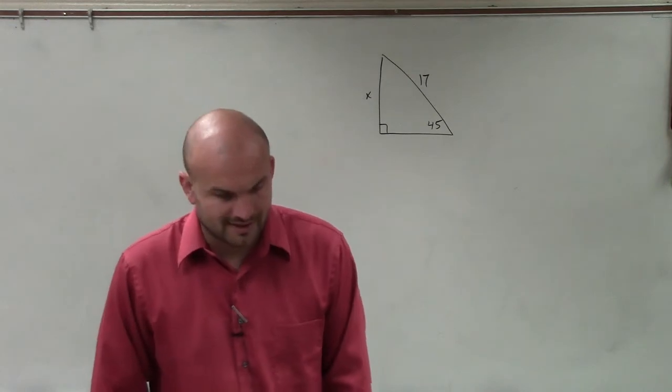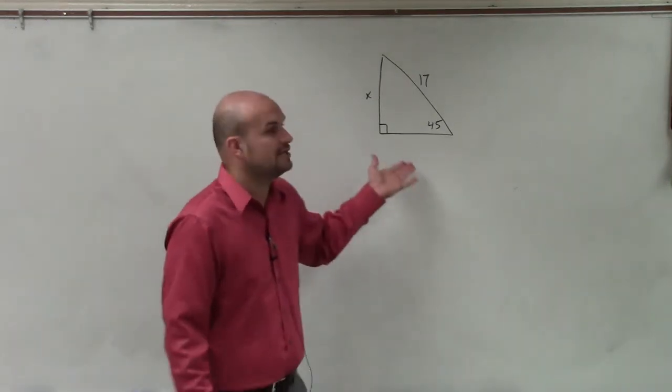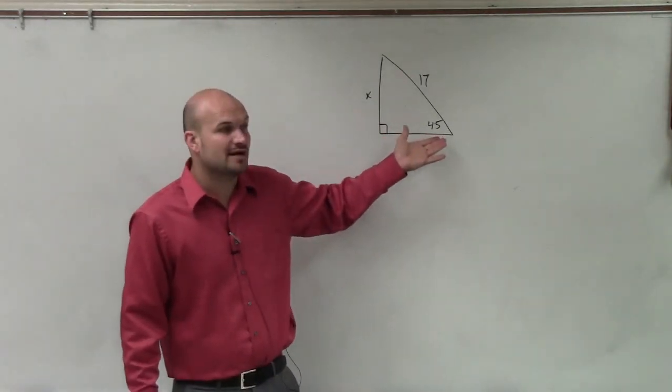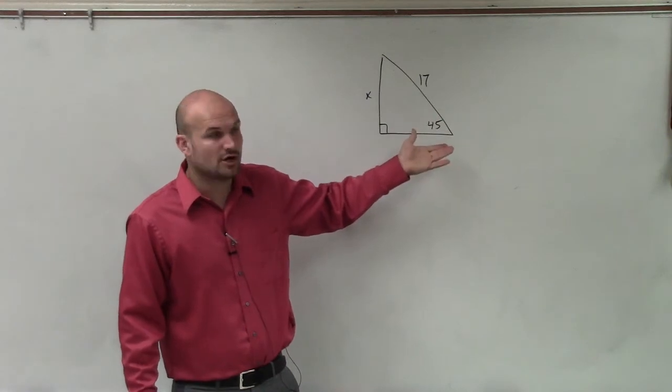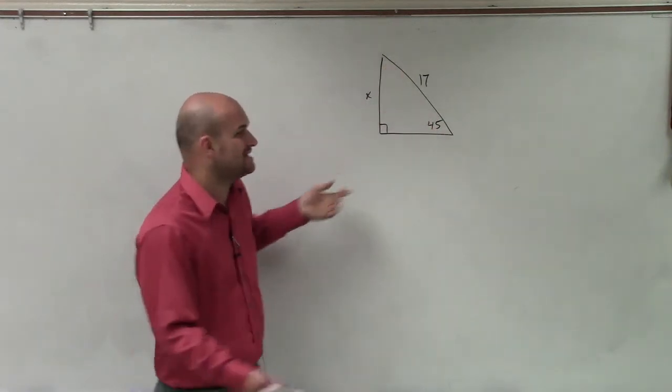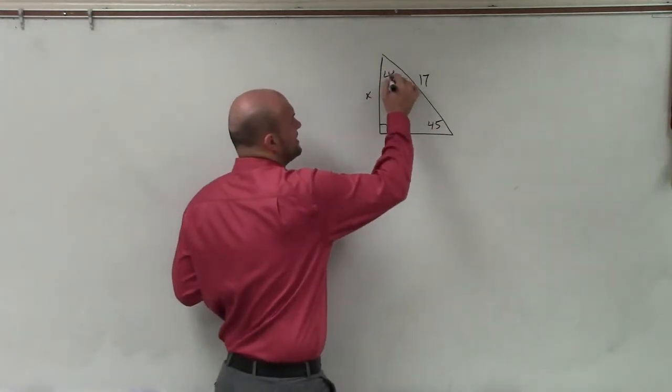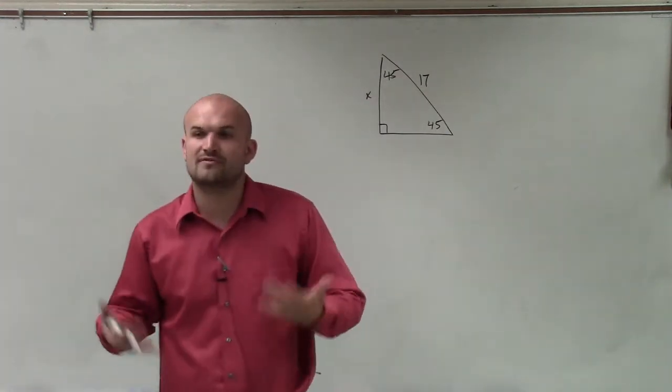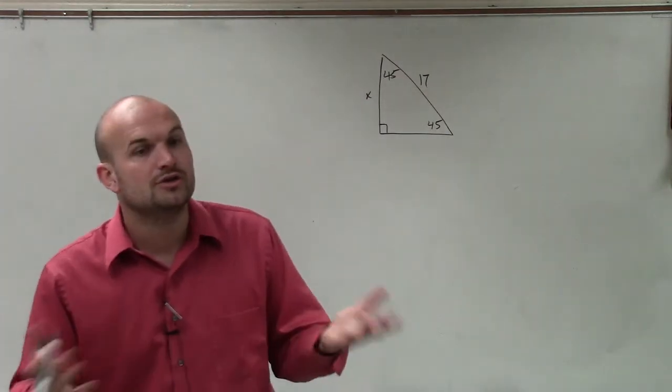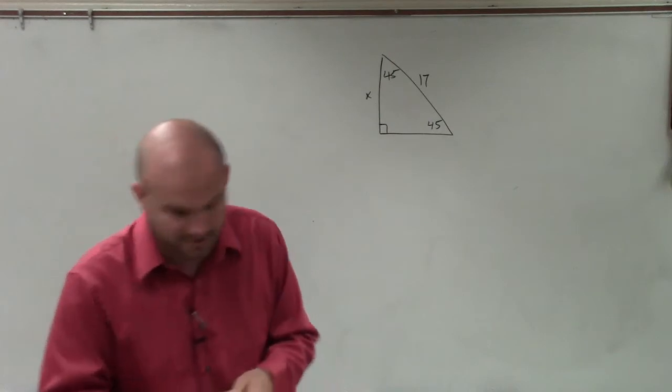So what we want to do is when we're looking at this, one thing we notice is we have a 90 degree angle, Tyler, and a 45 degree angle. So now, to go from this, we know that the other angle has to be 45. So what that creates is what we call a 45-45-90 triangle, which we call using our special right triangles.